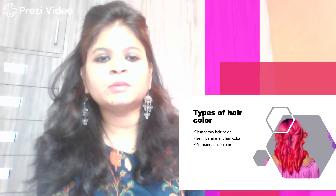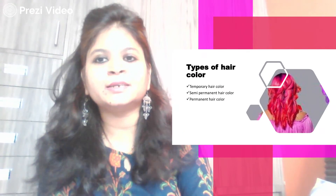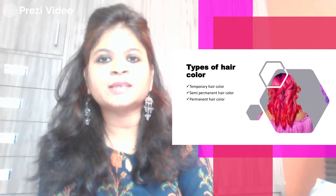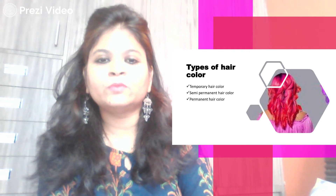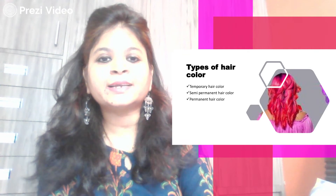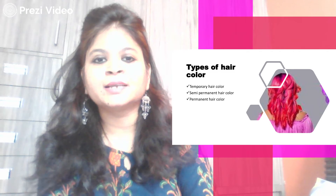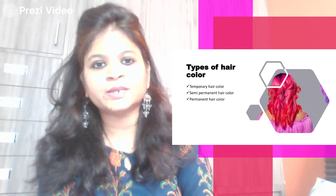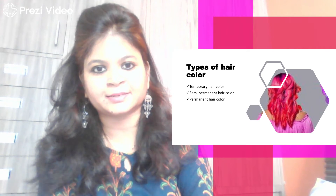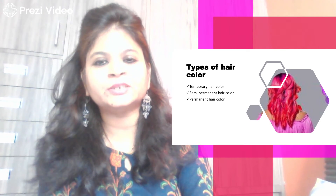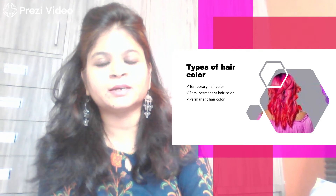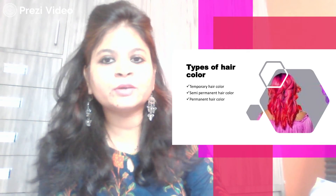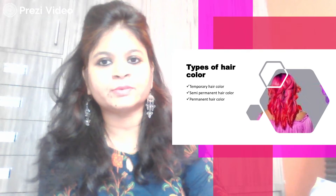The types of hair dyes available in the market are basically segregated into three types: first, temporary hair colors; second, semi-permanent hair colors; and third, permanent hair colors. There is another category known as hair lightening, which is simply the bleaching of colors whereby the melanin is reduced.